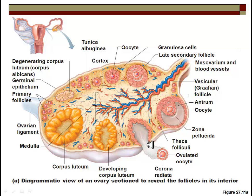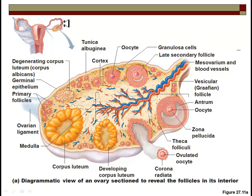Ovulation occurs around day 14 of a 28-day cycle — the side of the ovary literally ruptures. The corpus luteum you see here will be maintained if sperm meets egg. If fertilization occurs, it will continue to produce progesterone, often called the pregnancy hormone. If fertilization does not occur, the corpus luteum degenerates over the next 14 days and menstruation follows.